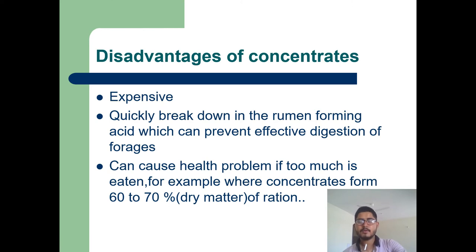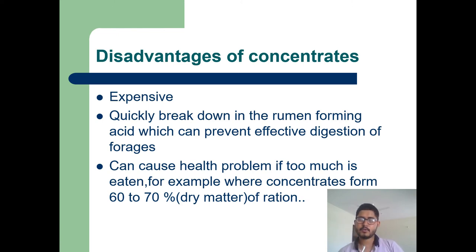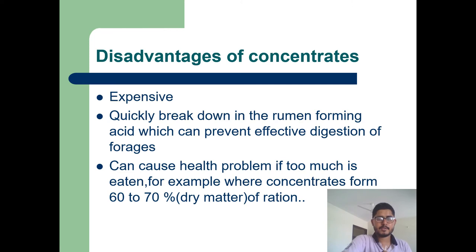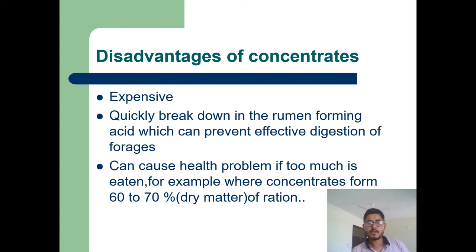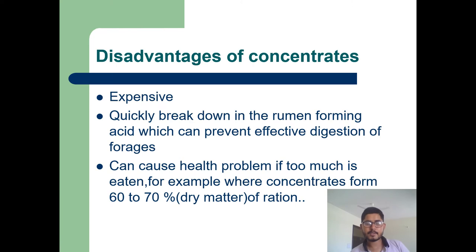Disadvantages of concentrate: The first disadvantage is that it is expensive. Feeding concentrate is not considered economical because it is made of different grains and cereals and meals, which makes its price very high. The second disadvantage is the quick breakdown of humic-forming acid, which can prevent the effective digestion of forages. The third disadvantage is that if we feed 60 to 70% dry matter as concentrate to dairy animals, it will affect their health and cause many health problems.